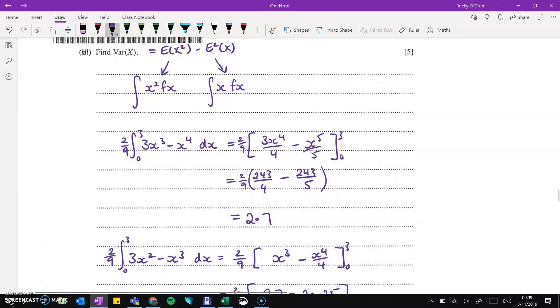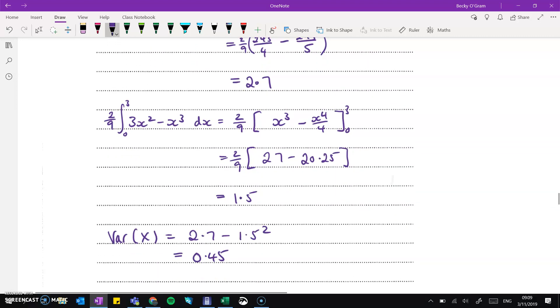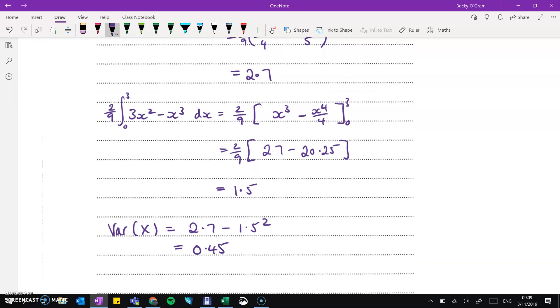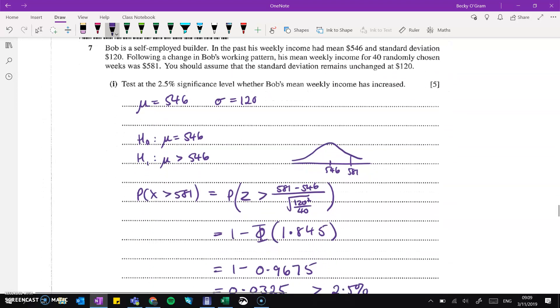Then find the variance. For the variance, we do the expectation of x squared minus the expectation of x all squared. So for the x squared part, we need to do our function times x squared and integrate that from 0 to 3. So this is the working out here. And then for the E of x part, the mean part, we do our function times x, integrate that from 0 to 3. And then the variance will be the first one minus the second one squared.